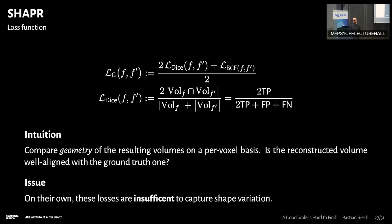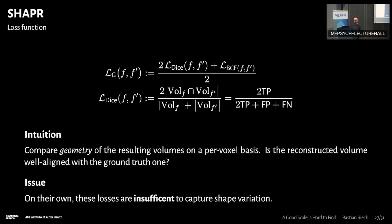For the normal loss function or for the geometry based loss function, the SHAPR method uses a geometry based loss that consists of two components. One is a dice loss. The other one is a binary cross entropy loss. And without going into the details here, let me just give you the intuition. Essentially it compares the geometry of the resulting volumes on a per voxel basis. So what it does is it's looking for whether the reconstructed volume is well aligned with the ground truth one. But there's one issue at least, namely on their own, these losses are not sufficient to capture shape variation. Because if I modify the shape a little bit, then its topological characteristics don't change. So I can rotate my icosahedron or my platonic solid in space all I want. It's still a platonic solid. But of course, these losses that are very restricted to the voxels themselves, they will then raise an alarm. So you're learning a very restricted set of shapes or shape features, less so than you could do in practice.